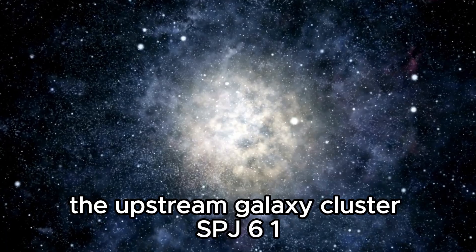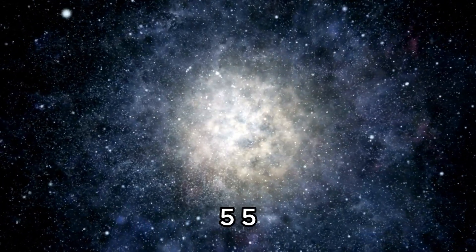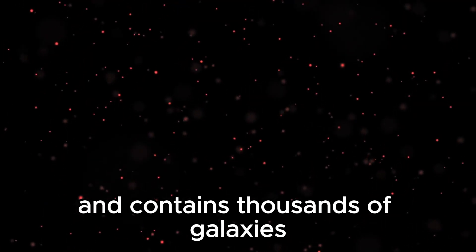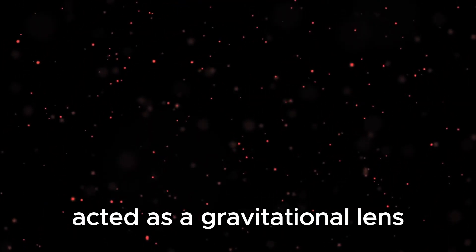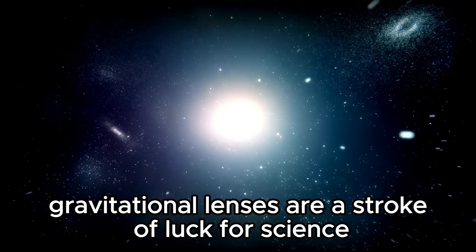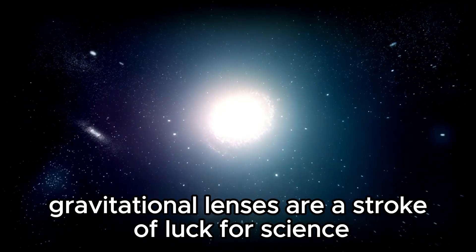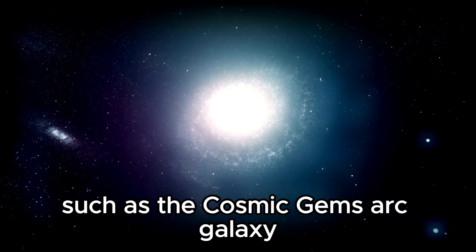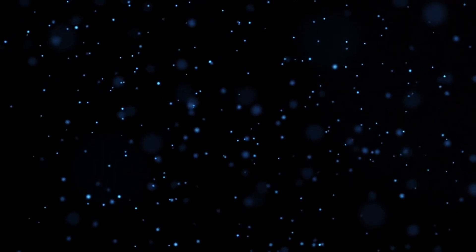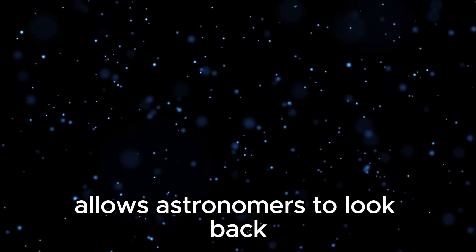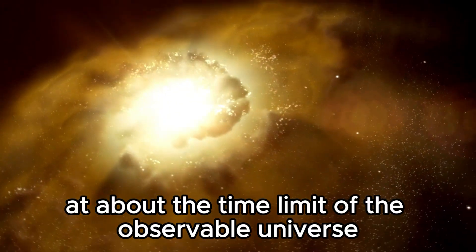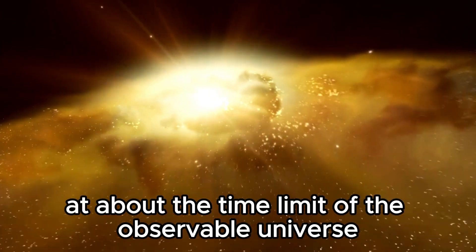The upstream galaxy cluster SPJ615574, which is itself around 4 billion years old and contains thousands of galaxies, acted as a gravitational lens. Gravitational lenses are a stroke of luck for science. Thanks to them, we can also study smaller objects such as the Cosmic Gems Arc galaxy. The study of this galaxy now allows astronomers to look back about 97% of total cosmic time, which puts us at about the time limit of the observable universe.